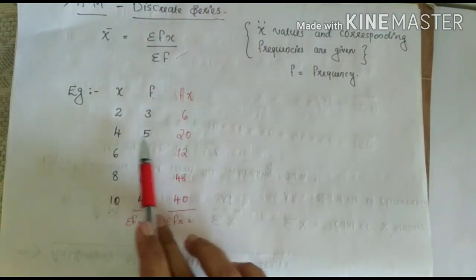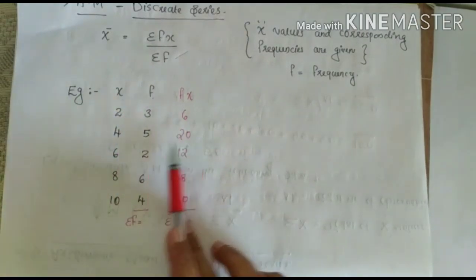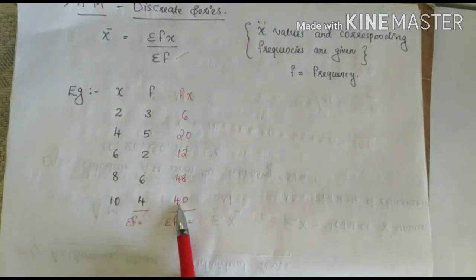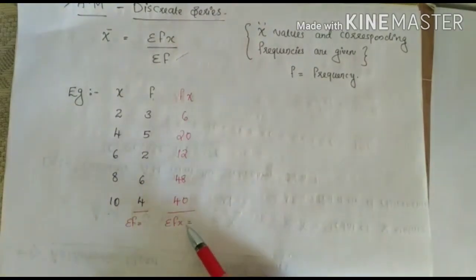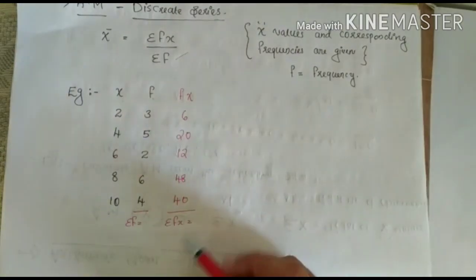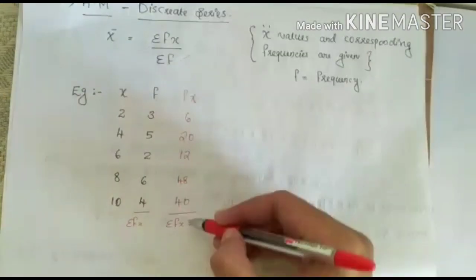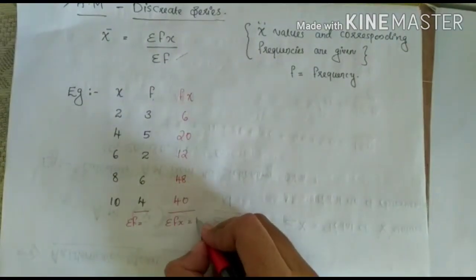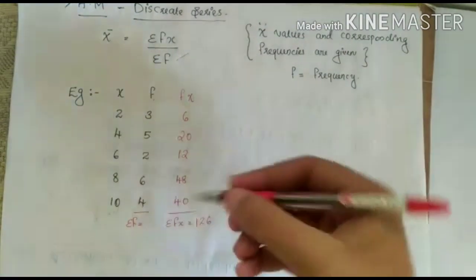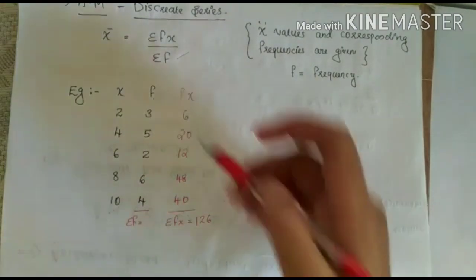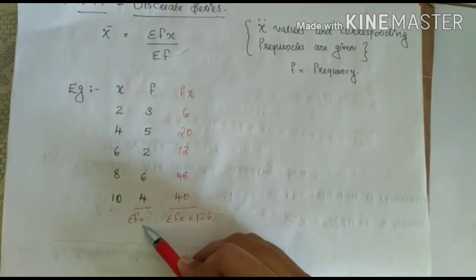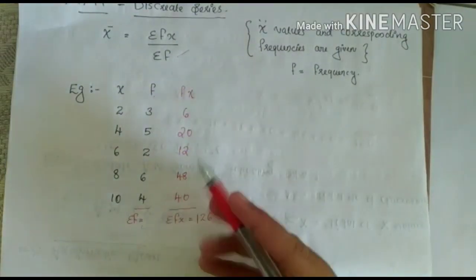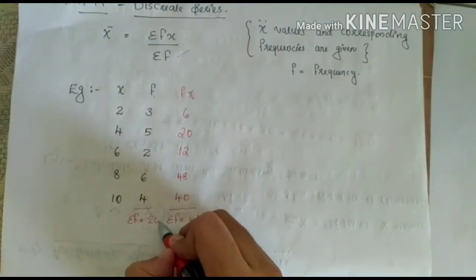So: 2 × 3 = 6, 4 × 5 = 20, 6 × 2 = 12, 8 × 6 = 48, 10 × 4 = 40. After that, find out sigma FX — the total of the FX column — which is 126. Then find out sigma F, the total of the frequency column, which is 20.